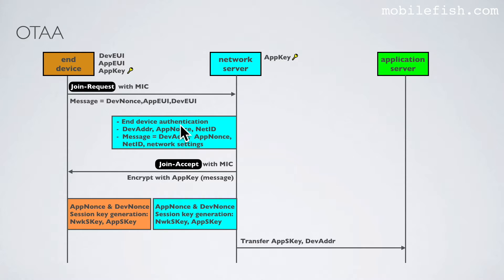If accepted, the following values are generated by the network server. The device address maps the DevEUI to a network-internal shorter address, which is 32 bits long, in order to reduce the protocol overhead in transmitted frames. The device address is similar to a client IP address. The network server also generates the AppNonce, which is a randomly generated number, and a network identifier.